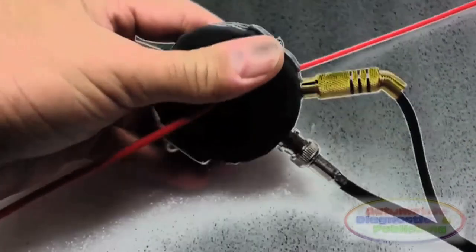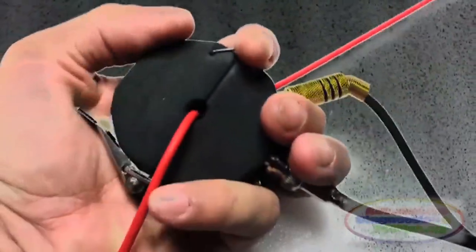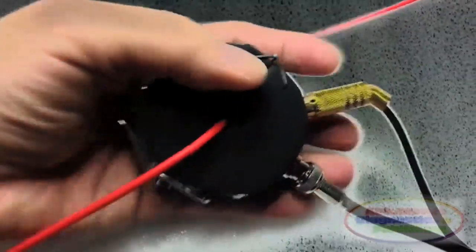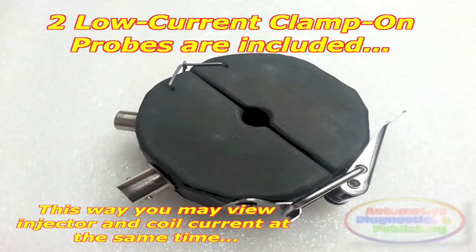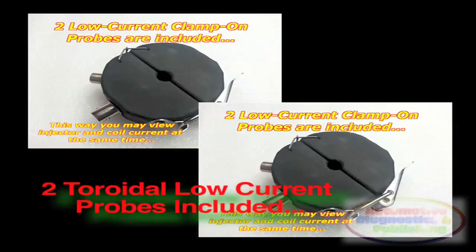But that's a matter for another time. Suffice it to say that the Scope 1 comes not with one, but two toroidal low current probes included. The rationale is that there is one instance where you will need two low current probes.